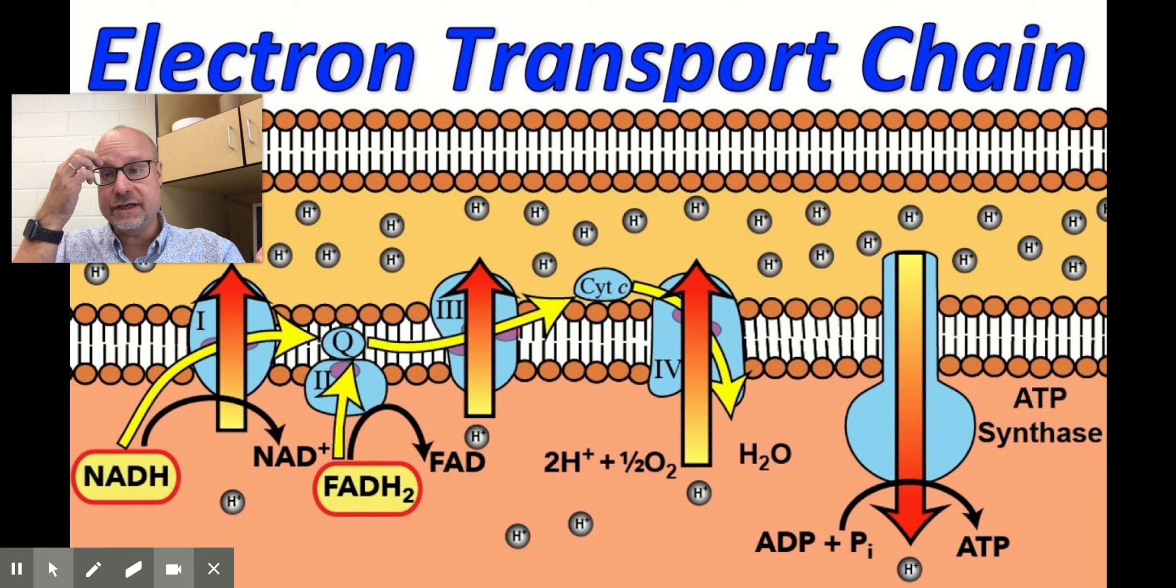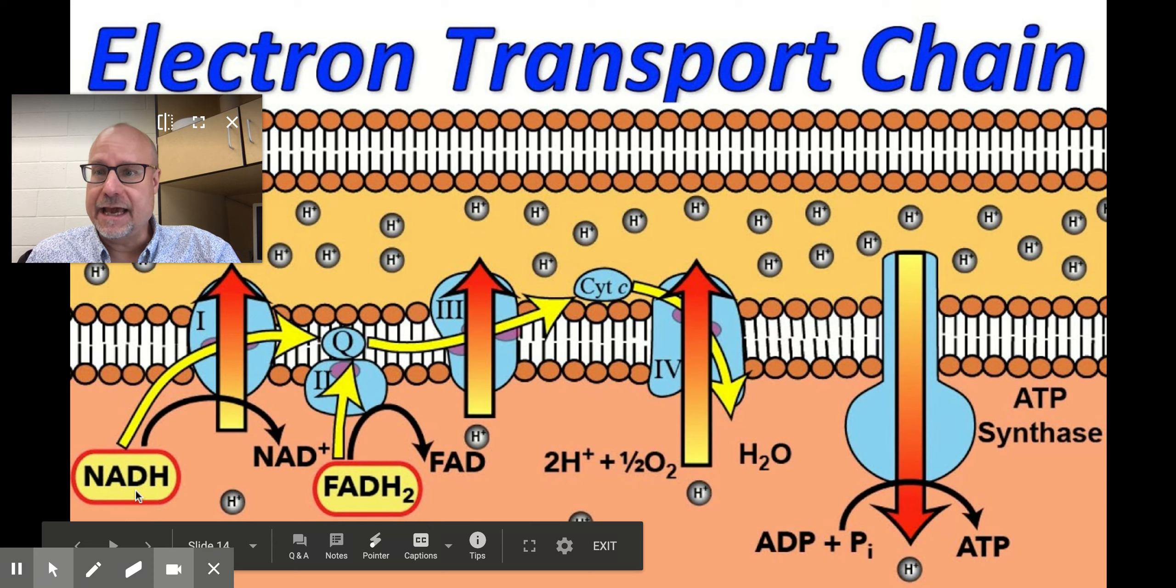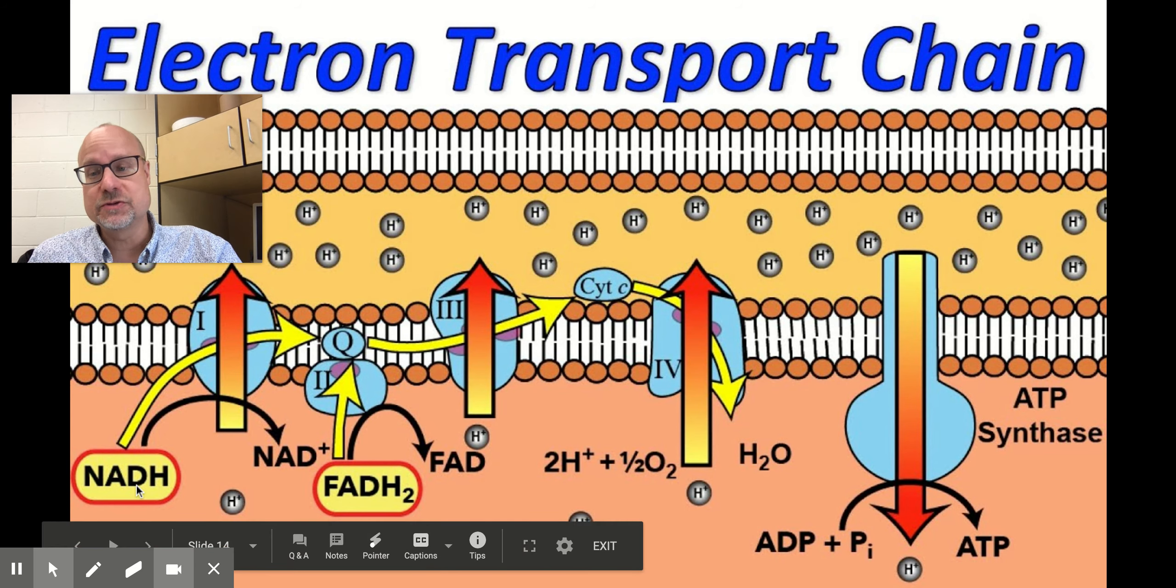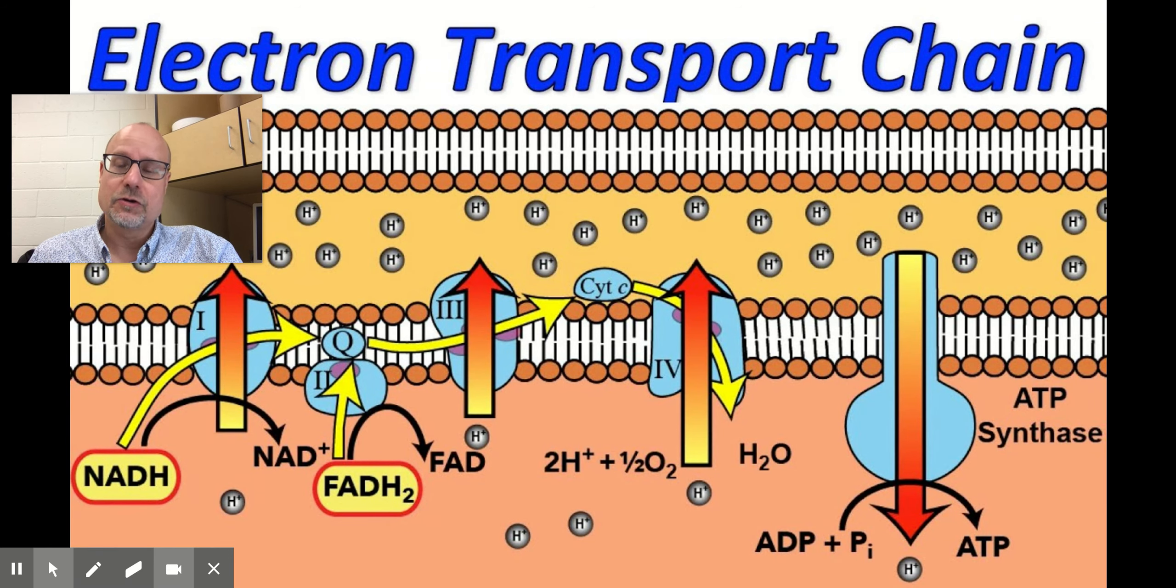And what we see here is the body manipulating this concept to create as much ATP as possible. Now, if you remember back in glycolysis, we made some NADH out of NAD plus. Back in the Krebs cycle, we made a bunch more NADH and a bunch of FADH2.